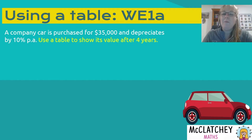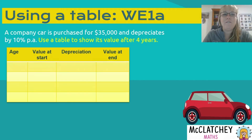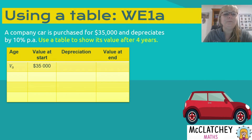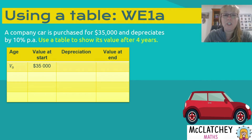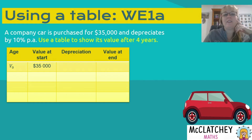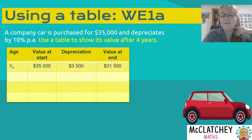We've got a company car purchased for $35,000 depreciating by 10% per annum, and we want to model that in a table for the first four years. We have columns for age, value at the start, depreciation, and value at the end. At time zero (V0), our starting amount is $35,000. We calculate 10% of that, which is $3,500, take that away, and at the end of the first year our value is $31,500.